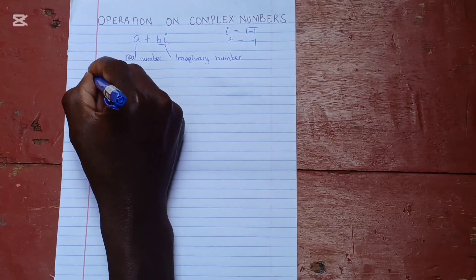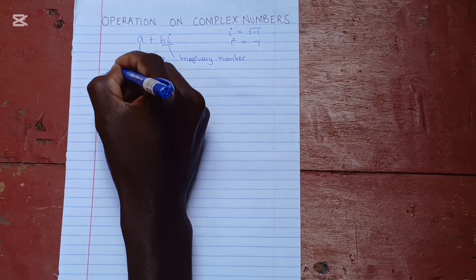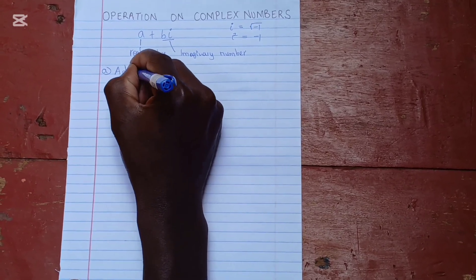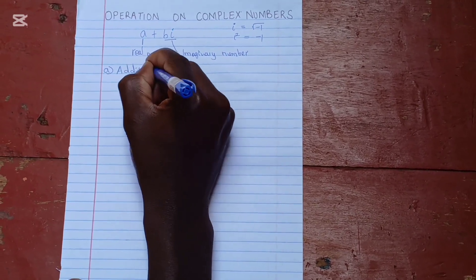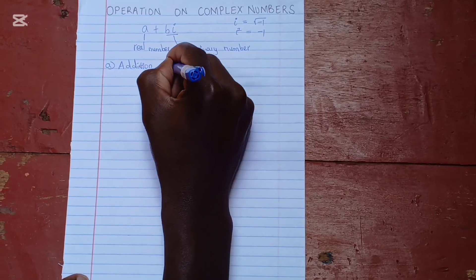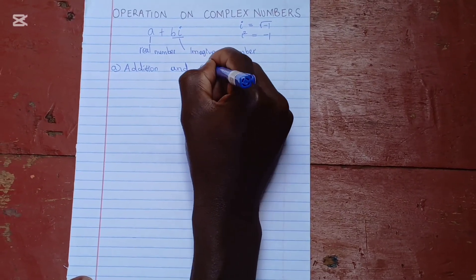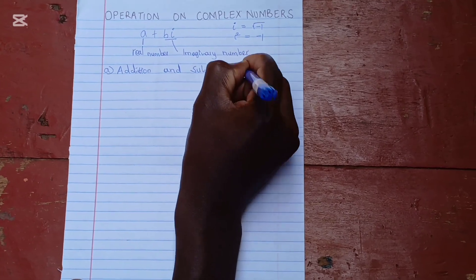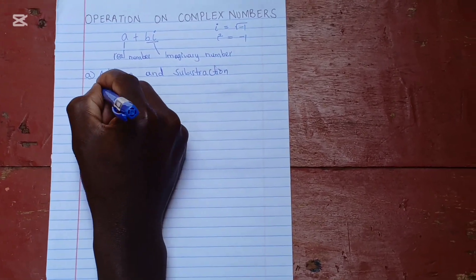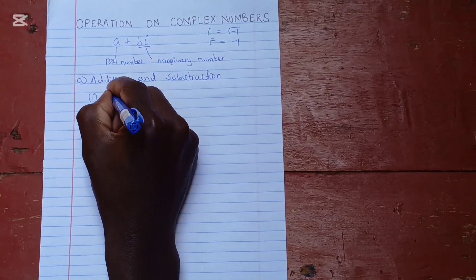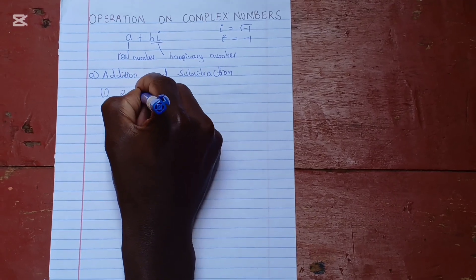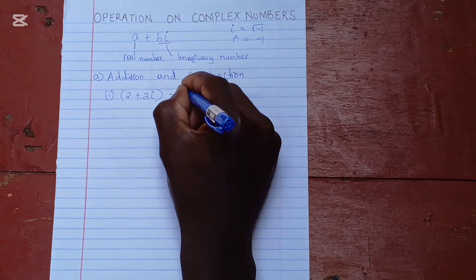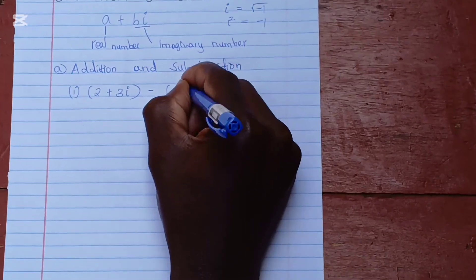Let's start by looking at addition and subtraction of complex numbers. Starting with one example: let's say 2 plus 3i, we subtract 1 plus 2i.